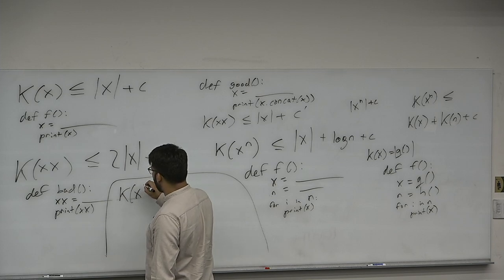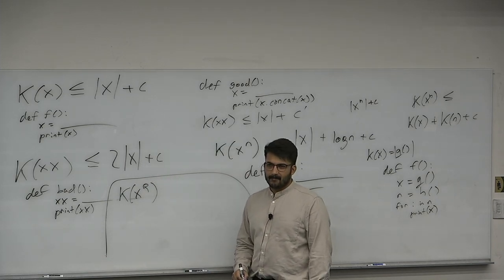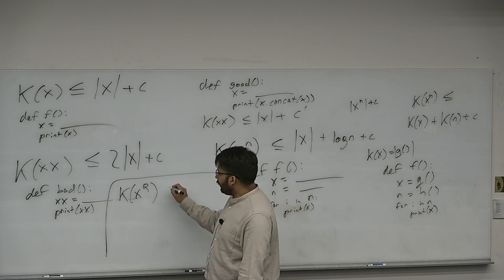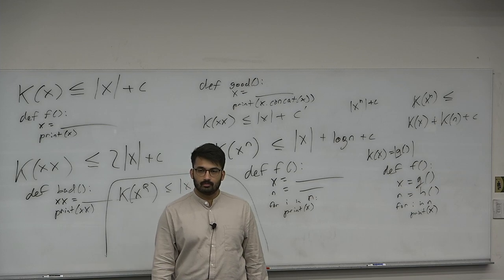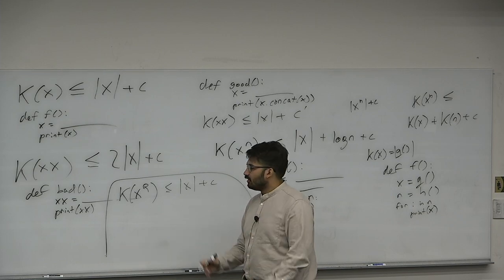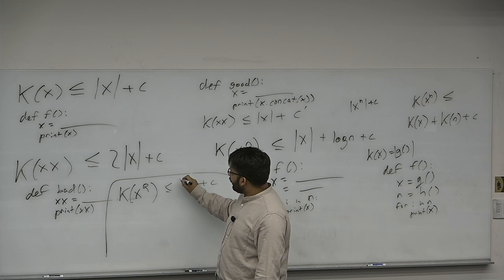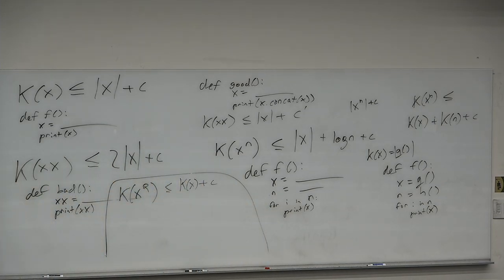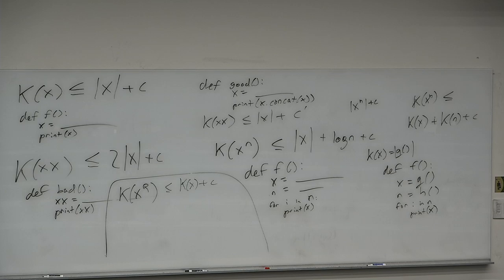What is K of x reversed? You can take the same program that prints x, then reverse the output — that's only a constant additional cost. So K(reverse(x)) ≤ K(x) + O(1). This aligns with our intuition: a string and its reversal should appear equally random. The concept of looking random is invariant to reversing.